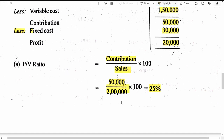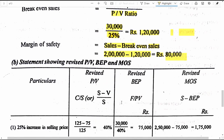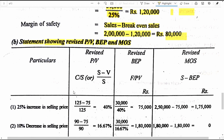Now let us get into question B — statement showing revised PV ratio, BEP and margin of safety. We will answer the requirement for each of the 8 situations separately. The formula for PVR is contribution divided by sales, where contribution equals sales minus variable cost. Revised BEP is fixed cost divided by revised PVR. Revised margin of safety is actual sales minus BEP sales.